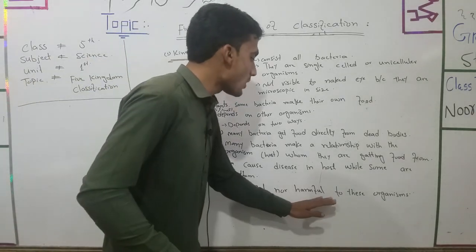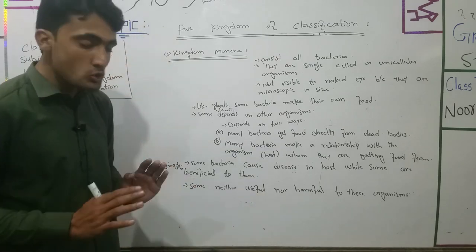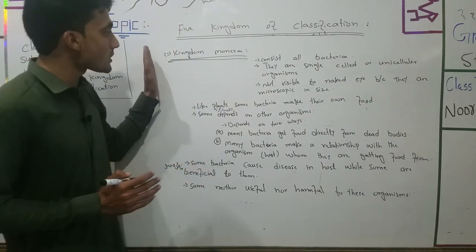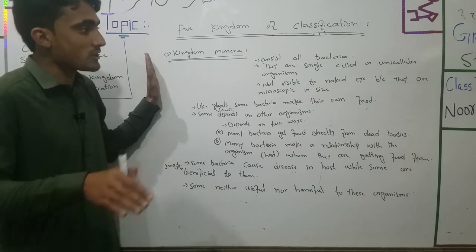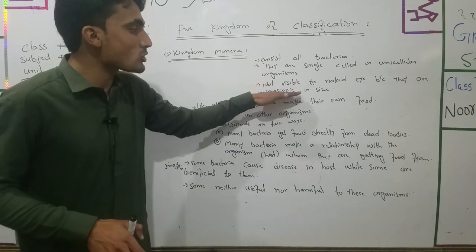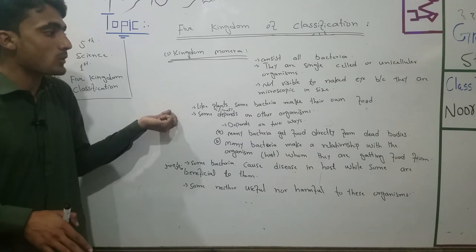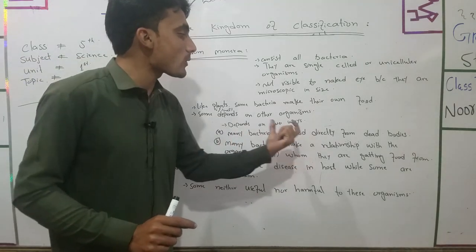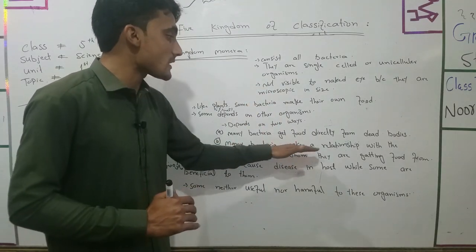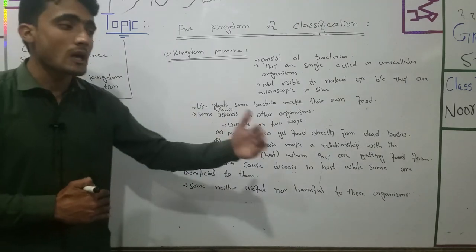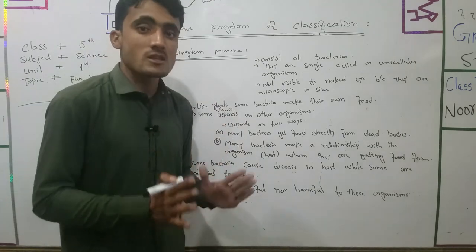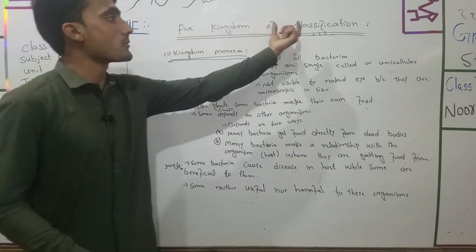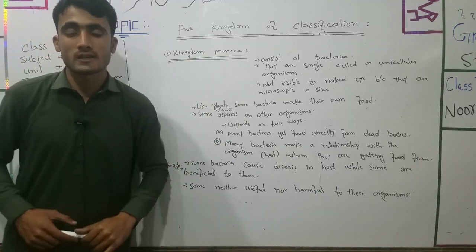Not all bacteria are harmful — some are useful and some are harmful. That concludes the first kingdom, Kingdom Monera, which includes all bacteria. Bacteria are unicellular, microscopic, and can be beneficial or harmful. This is the summary of the first kingdom. Next, kingdom Animalia will be discussed in the next video, inshallah. Thank you.